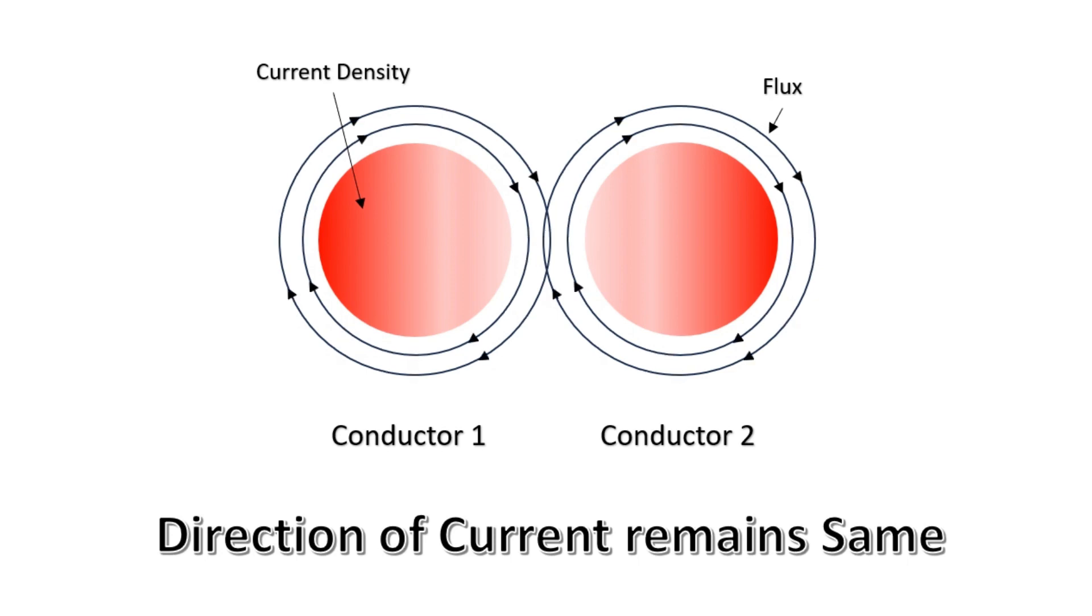This cancellation of magnetic fields is a significant occurrence as it directly influences the flow of the current. As a result, no current is able to flow through that particular half of the conductor. The current starts to accumulate, or crowd, in the remote half of the conductor due to the magnetic field cancellation in the closer half.